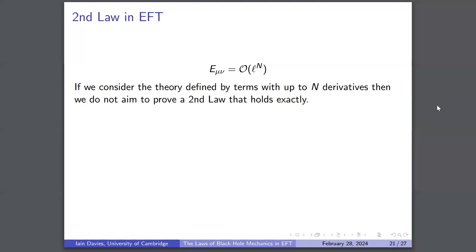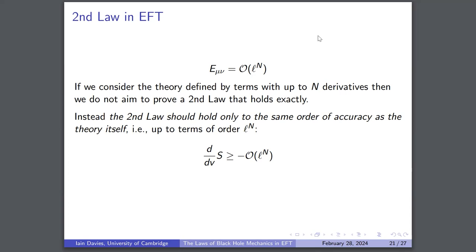For the second law in EFT: if we consider the theory up to some n derivatives, then the equation of motion can be written with an order ℓ^n error term. We shouldn't aim to prove a second law that holds exactly, since we don't know the theory beyond n derivatives. Instead, we should aim to prove the second law holds up to the same order of accuracy as the theory itself — up to terms of order ℓ^n. So we aim to prove that the rate of change of S along the horizon is non-negative up to order ℓ^n terms.